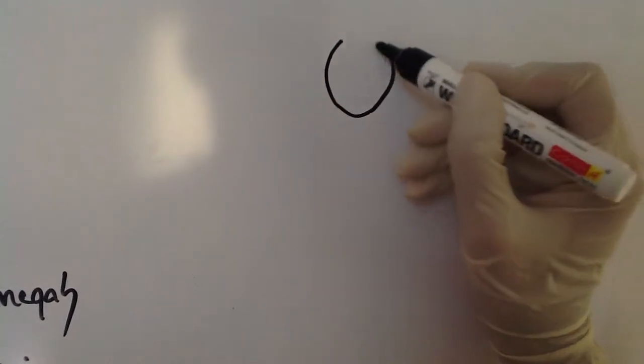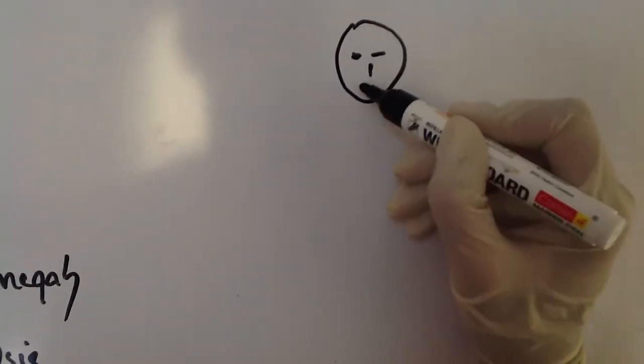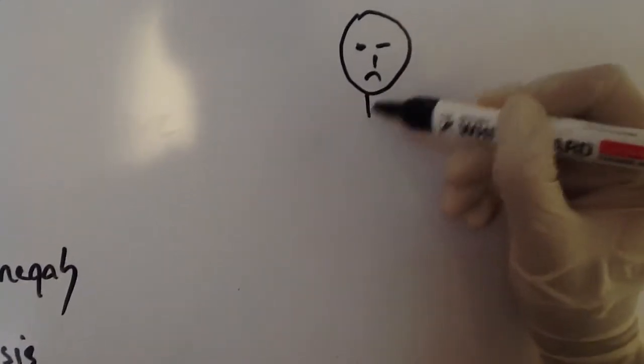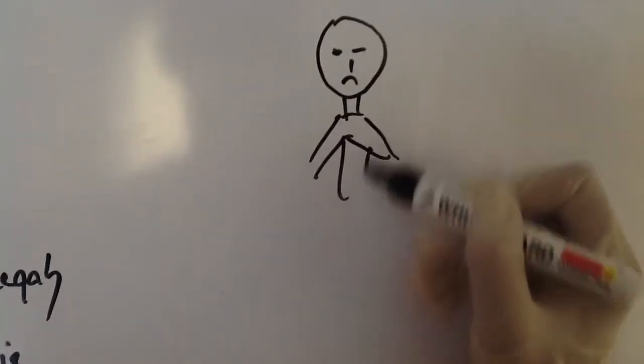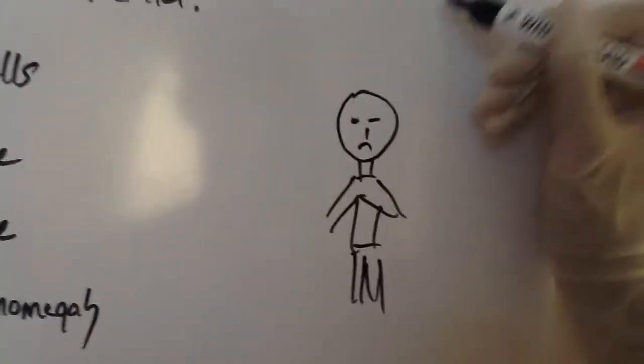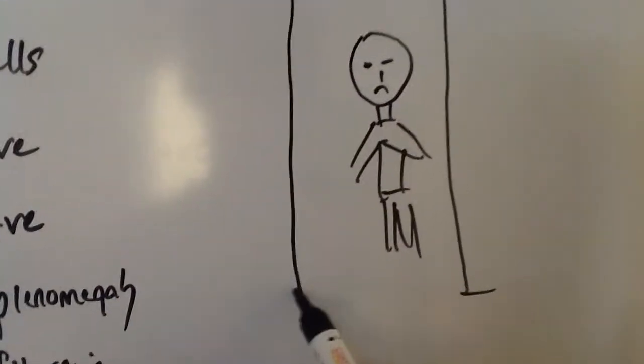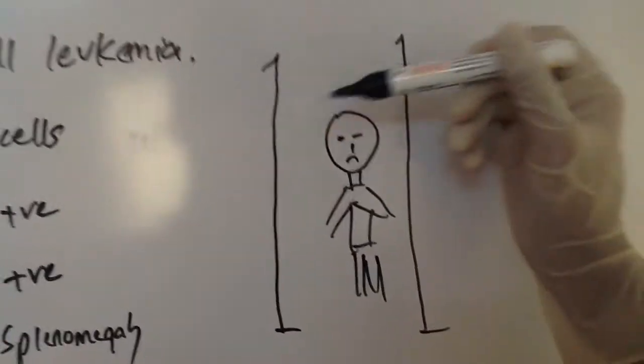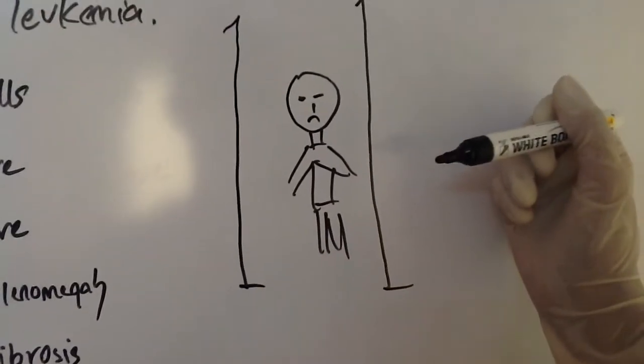So now let's begin. Imagine a lymphocyte. It's not a very happy lymphocyte because he is trapped, imprisoned. Imagine these are vertical bars of a prison and this lymphocyte is trapped inside.